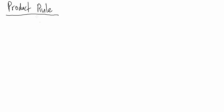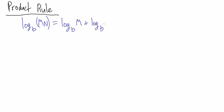In this video we're going to explain the product rule for logarithms. The product rule says if we have the base b log of m times n, then that equals the base b log of m plus the base b log of n. Let's go and see why that's true.